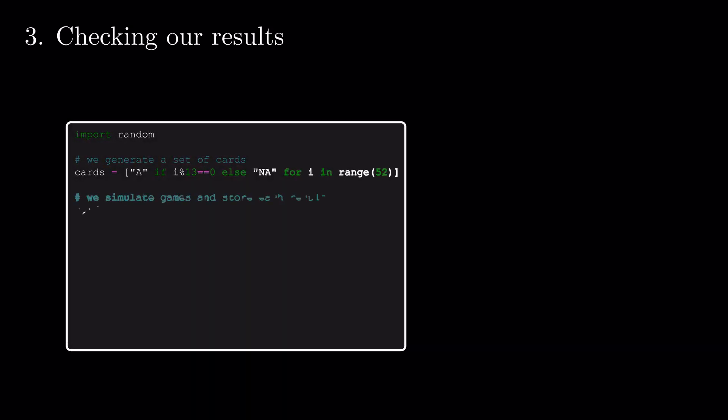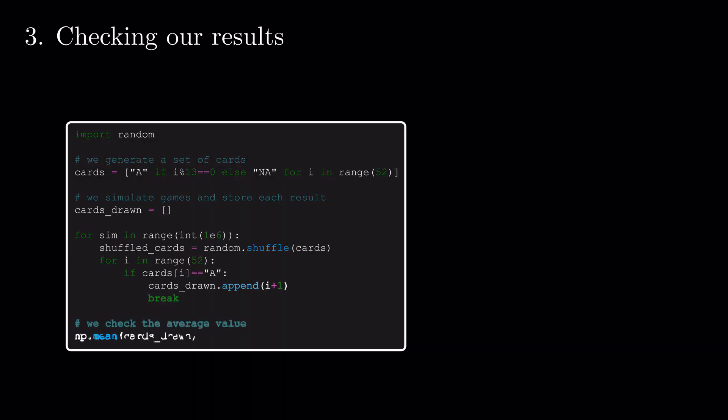Whether we want to triple check the result, we can also simulate our expectations for a million shuffled decks and arrive at the same result.